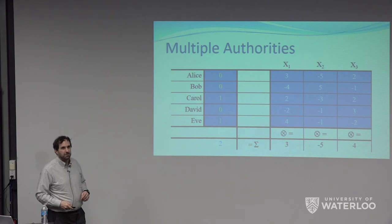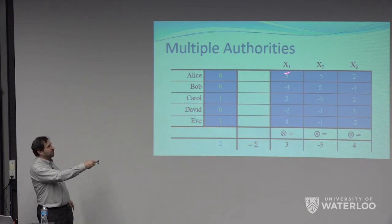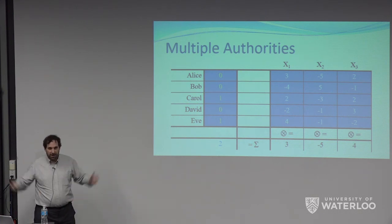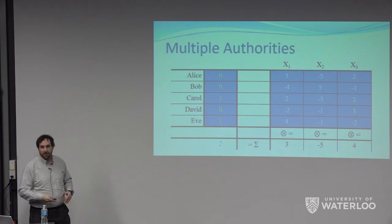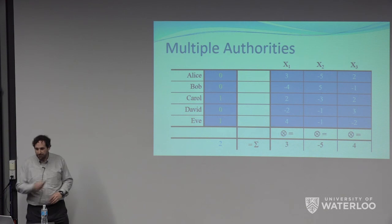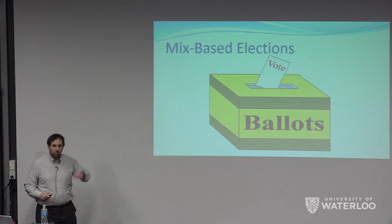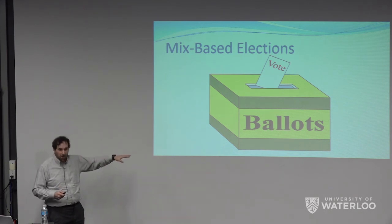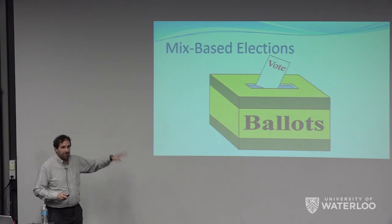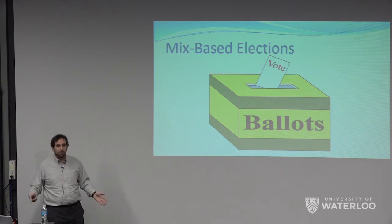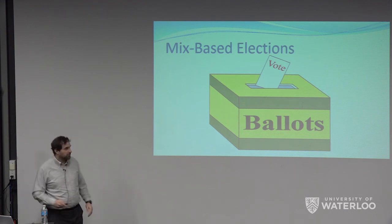Everyone encrypts to the same public key — or you can think of it as a set of public keys, one for each component. The better way is there's one public key everyone encrypts to, and things are decrypted piecemeal. More modern techniques allow you to combine keys so it's just one encryption — it's more convenient. The original approach 30 years ago used separate public keys, but modern techniques allow combining them.